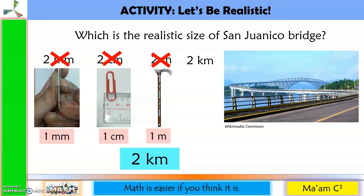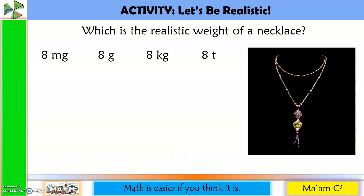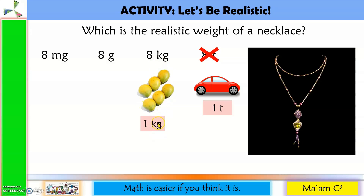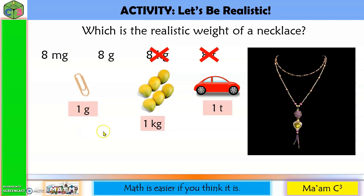Another question: which is the realistic weight of a necklace — 8 tons, 8 kilograms, 8 grams, or 8 milligrams? Eight tons is the weight of a small car — definitely not. Eight kilograms is equivalent to 48 mangoes — of course not. Eight milligrams is 1 gram divided into 1,000 parts — almost negligible. The correct answer is 8 grams.